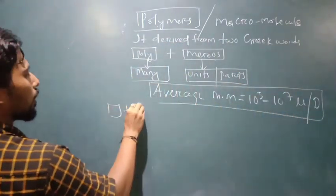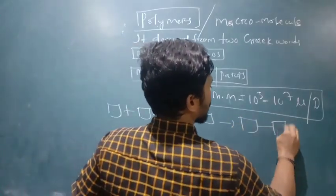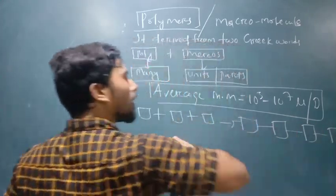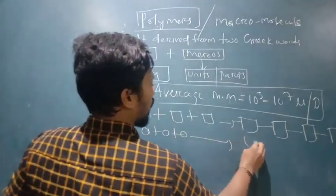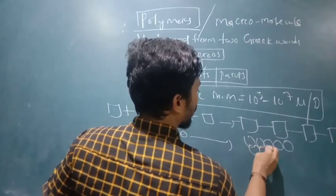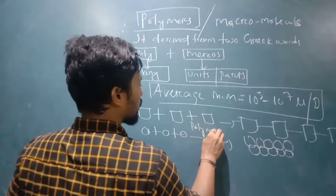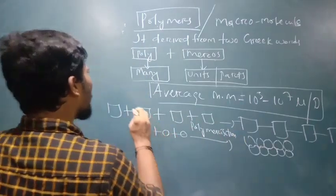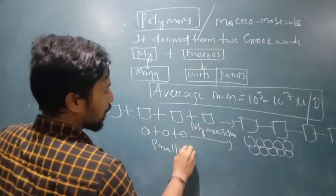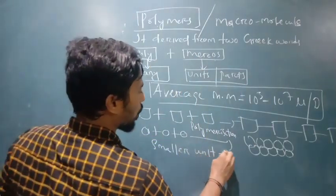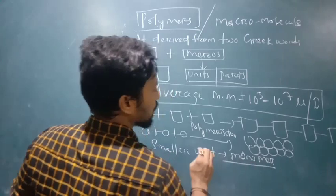The repeating unit is a small monomer, and it forms a large macromolecule. If the molecular mass is large, it is a large linear chain. Small monomers with high molecular mass form large molecules. The process is called polymerization — small units combined and joined together through the polymerization process.